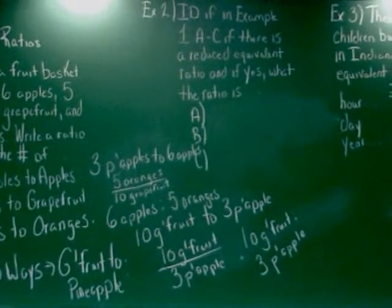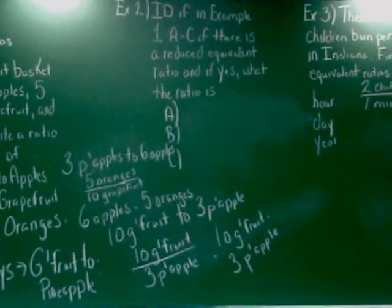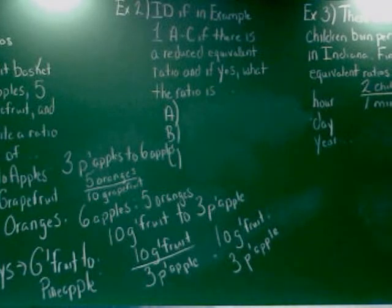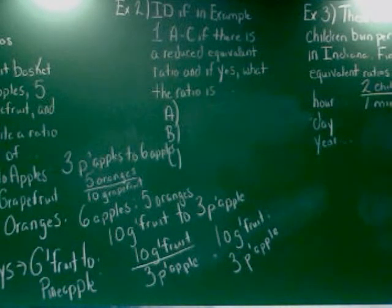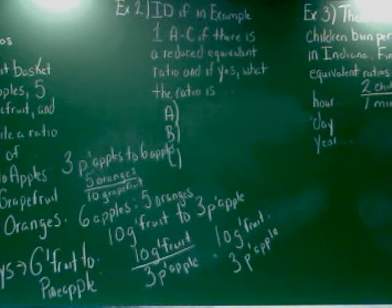It refers to Example 1. It says we're supposed to identify if an example is 1A through C, if there is a reduced equivalent ratio, and if so, what's the rate for it? Now that sounds like a lot, but all they're really asking you is can you reduce it like a fraction, and if so, what would that reduced one be?